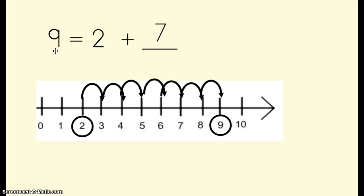9 equals 2 plus 7. I have 9 on one side. I need 9 on the other side. 2 plus 7 equals 9.